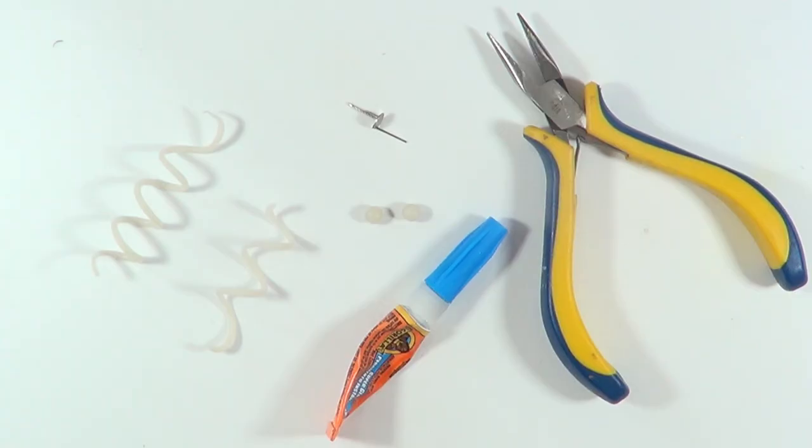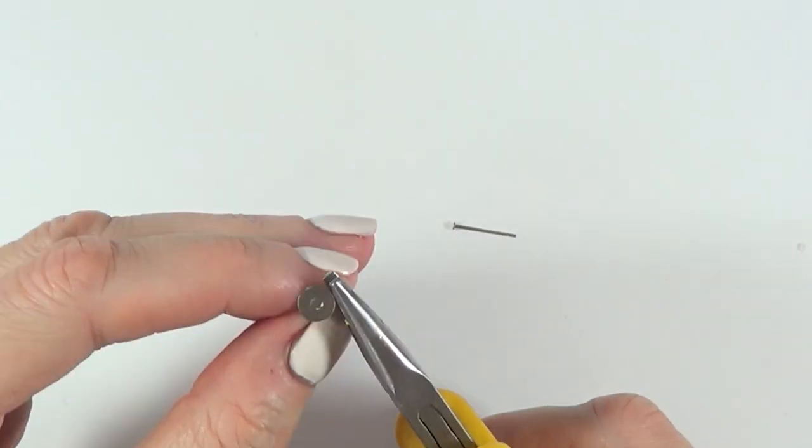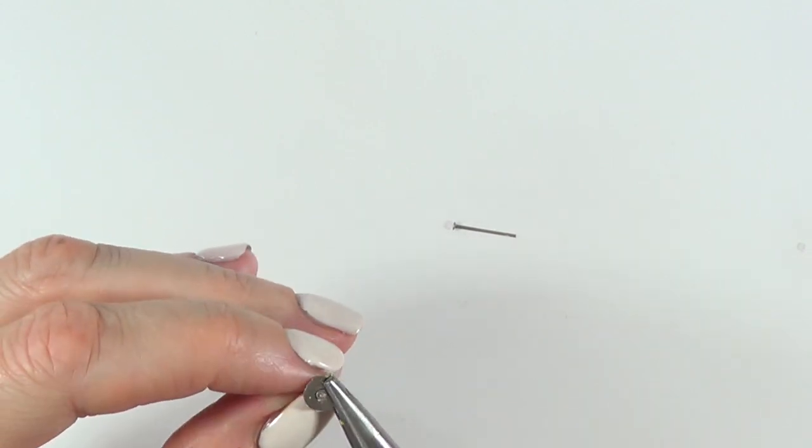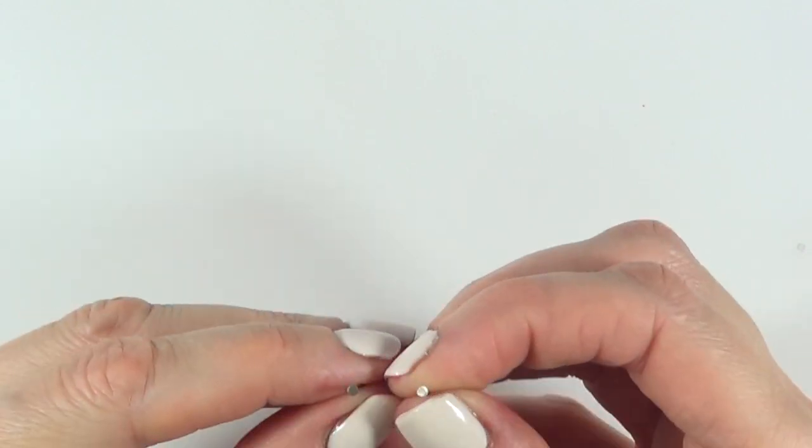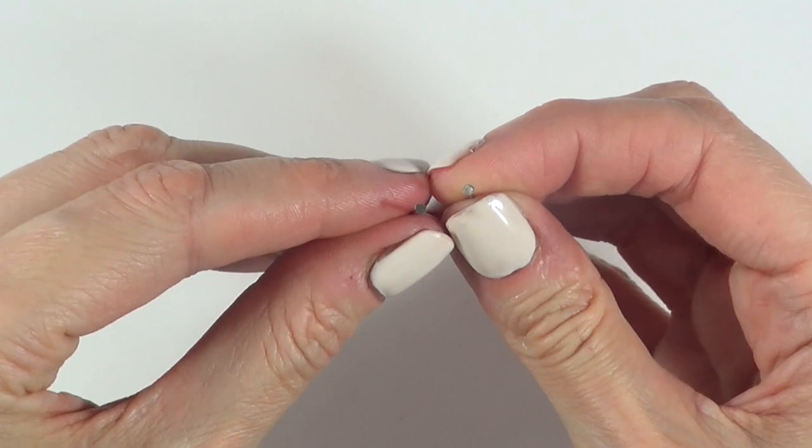Then it's time to assemble the whole thing. For that, I'm going to be using my pliers, two stud earrings, and my super glue. Because the stud earrings that I have have this big part on them, I'm just going to be taking my pliers and getting rid of that part.